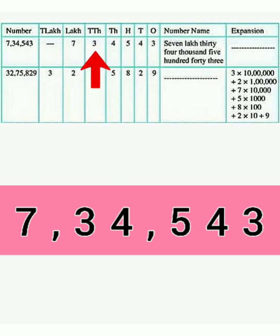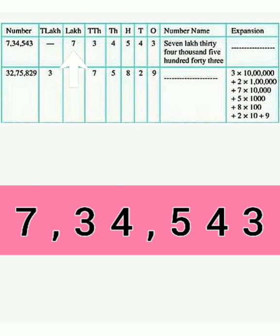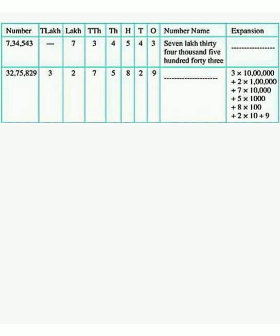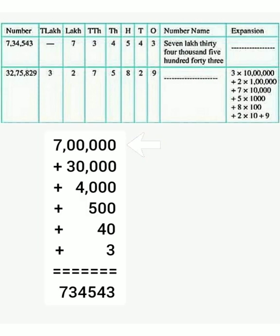The fifth digit from the right side is 3 and it is on the 10,000s place, and hence its value is 3 into 10,000 is equal to 30,000. The sixth digit from the right side is 7 and it is on the lakh place. Adding all these numbers we will get our original number 7,34,543 back. So, the expansion form is 7 lakh plus 30,000 plus 4,000 plus 500 plus 40 plus 3.